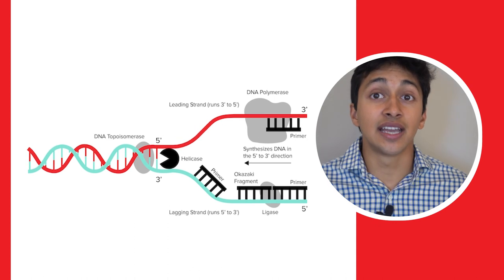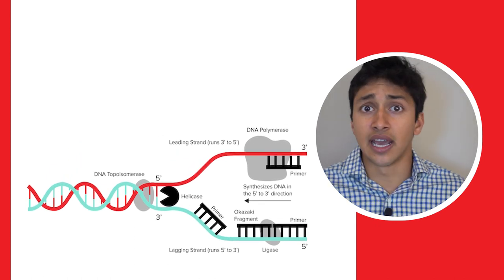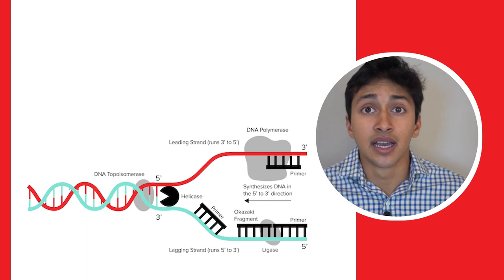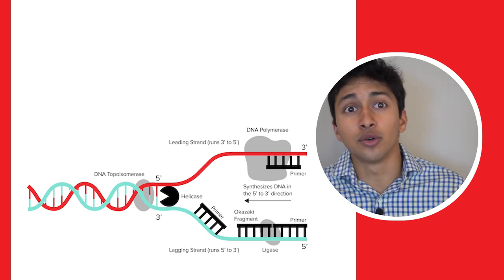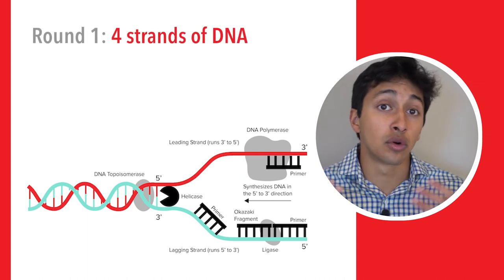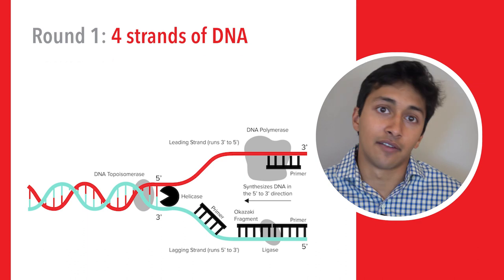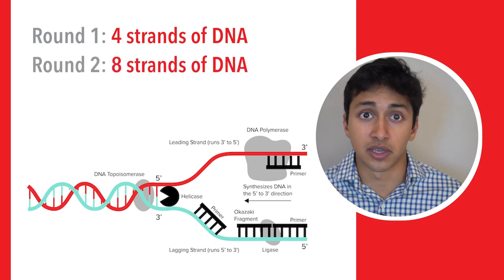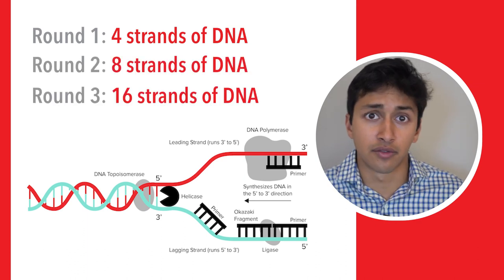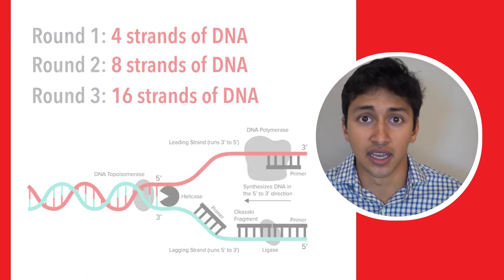Since DNA is a double-stranded molecule, and since both strands of DNA can be replicated at the same time, the end result after one round of replication is four total strands of DNA. After the second round of replication, there are eight strands of DNA, and after the third round of replication, there are 16 strands of DNA.